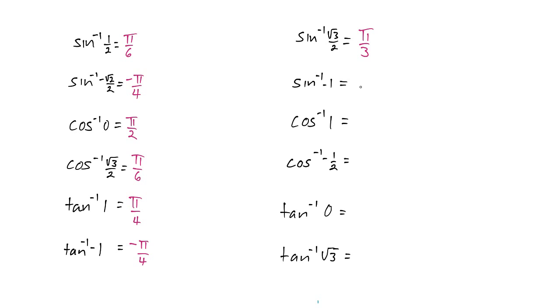Sine inverse of negative 1? When is the y value negative 1? At the bottom of the unit circle. So we want the angle to be negative pi over 2. 3 pi over 2 would not work because it's not between negative pi over 2 and positive pi over 2.